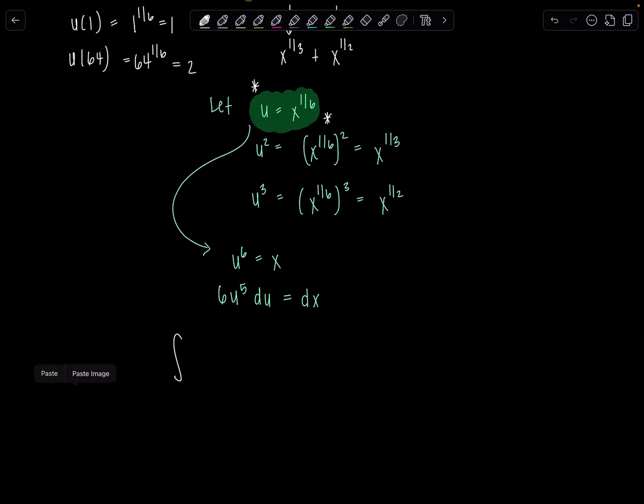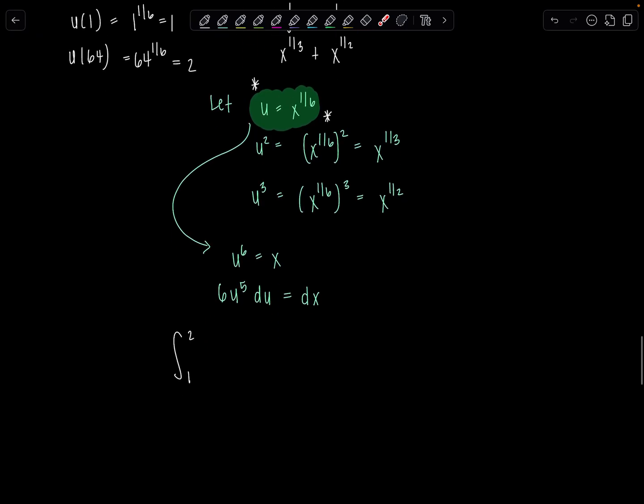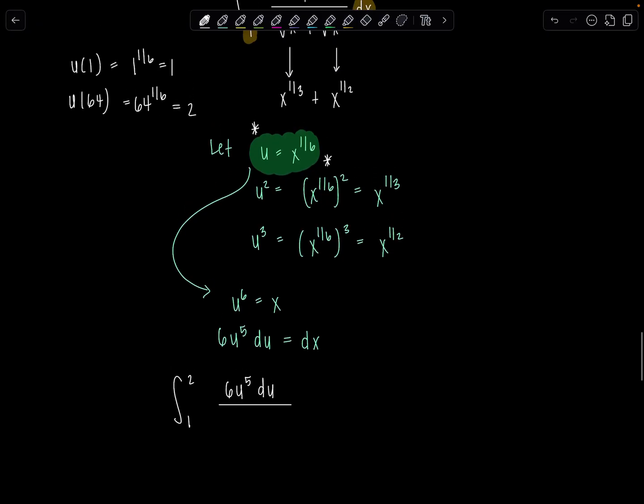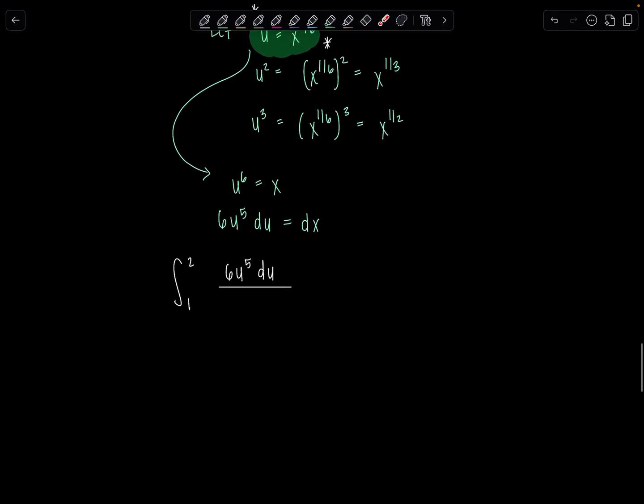We have now integral 1 to 2. This dx is going to be replaced with all of this, 6u to the 5th du. So let me just put that all up top here, 6u to the 5th du. Over, and then we've got cube root of x plus square root of x. Well, remember, cube root of x, that's exactly u squared, and then square root of x is u cubed. So that's what I have in the denominator now, u squared plus u cubed.